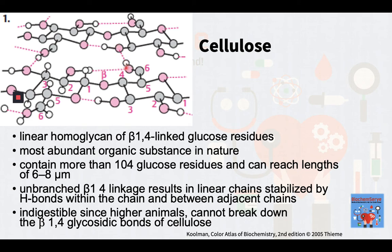Thus, in higher animals, including humans, because they lack the enzymes that can break down the beta-1,4 glycosidic bonds of cellulose, cellulose is indigestible. But it serves an important role of providing roughage. Many herbivores, however, exemplified by the ruminants, have symbiotic unicellular organisms in their digestive tracts that break down cellulose and make it digestible by the host.